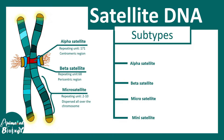Microsatellites are very small repeat units with repeat units from 2 to 10 base pairs, and they are dispersed throughout the chromosome. In contrast, minisatellites are enriched in telomeric and subtelomeric regions, and their repeat unit ranges from 10 to 100 base pairs. So there are different categories of these sequences and they are quite diverse.